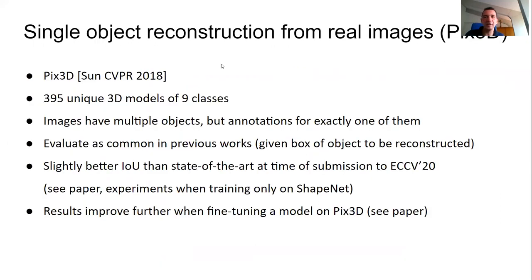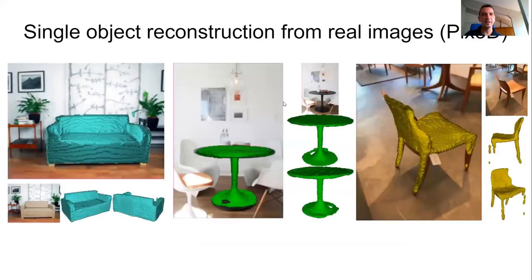We also looked at object reconstruction on real images using Pix3D — a dataset with full 3D meshes and real images. Images have multiple objects, but typically only one is annotated with a 3D mesh. We were better than state-of-the-art at the time of submission to ECCV. You can train the model purely synthetically or on ShapeNet synthesis plus Pix3D training data, and that makes it better.